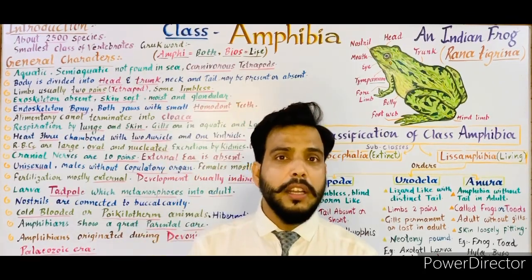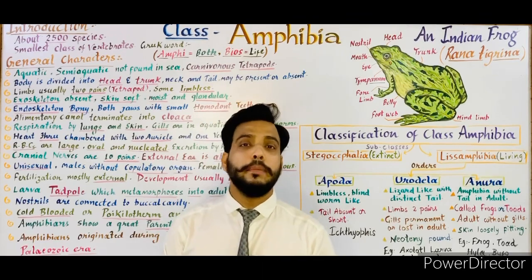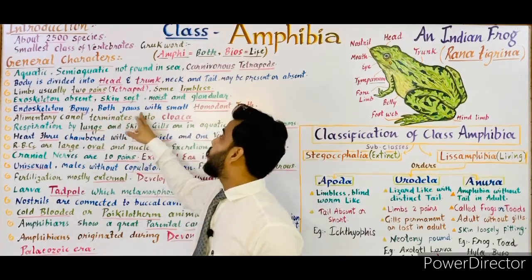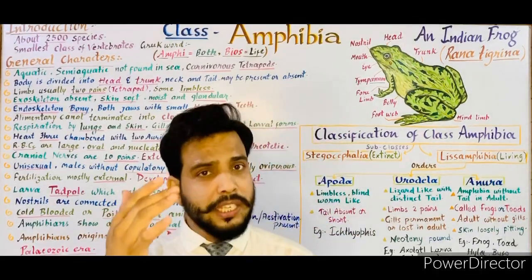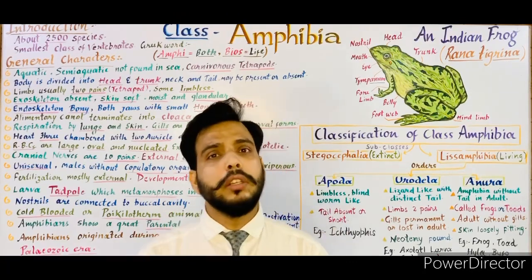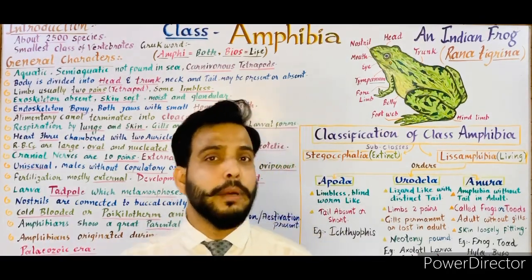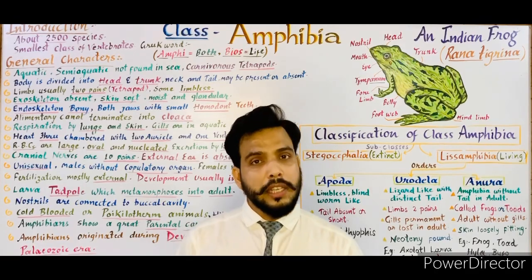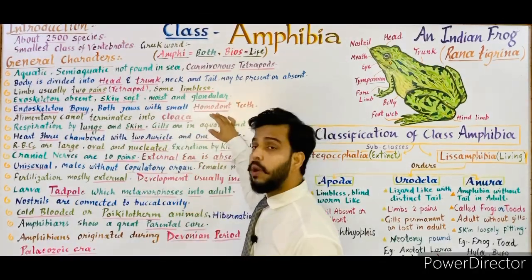Some amphibians are capable of changing color due to pigment transformation. The endoskeleton is bony, as they belong to phylum Chordata. Both jaws have small homodont teeth — the mouth is slightly large and both the upper and lower jaw consist of minute teeth. Homodont means all teeth are similar in shape and size, in contrast to humans who have heterodont dentition: incisors, canines, premolars, and molars. In fishes and amphibians, teeth are always homodont.